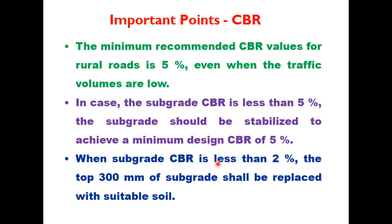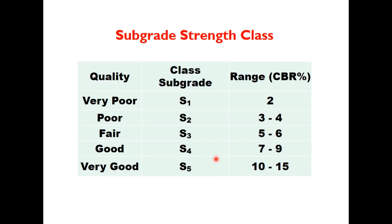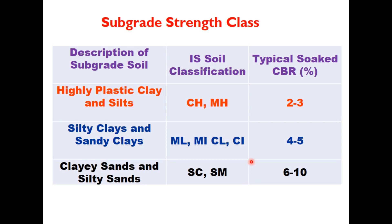When CBR is less than 2%, the top 300 mm of subgrade soil should be replaced with suitable soil having CBR of 5%. There are five subgrade categories S1 to S5 based on CBR: S1 is very poor soil with CBR ≤ 2%, S2 is poor with 3–4%, S3 is fair with 5–6%, and S5 is very good soil with CBR ranging from 10 to 15%.